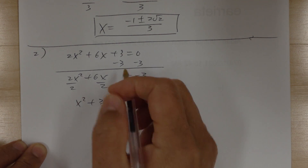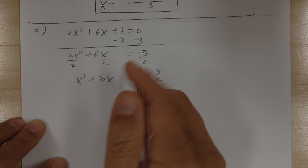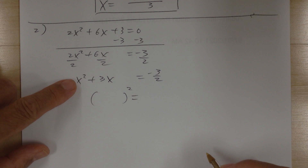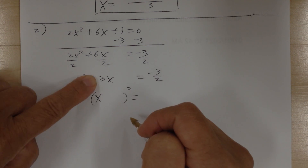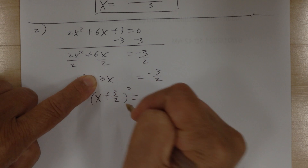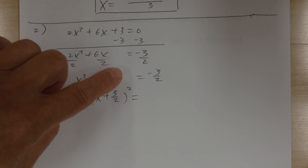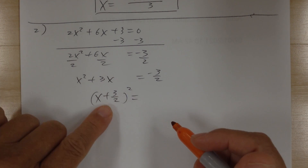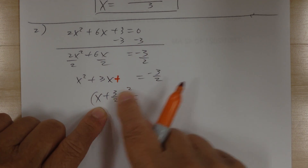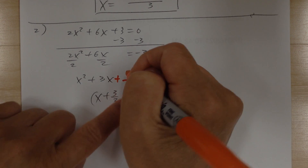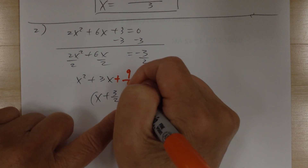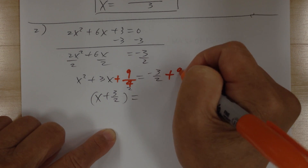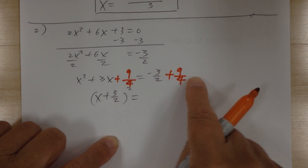Leave a blank space for the missing number. To complete the square, you need (x + 3/2)² — the 3/2 is half of 3. The missing number is the square of 3/2: 3² gives 9, 2² gives 4, so add 9/4 to both sides. To add −3/2 + 9/4, find the common denominator: multiply −3/2 by 2 to get −6/4, then −6/4 + 9/4 = 3/4.